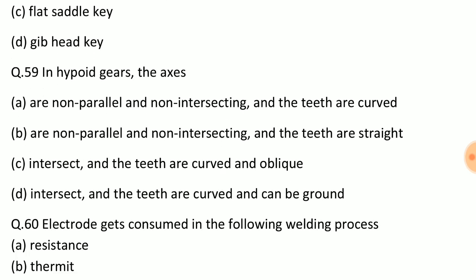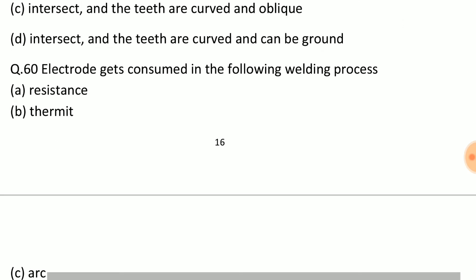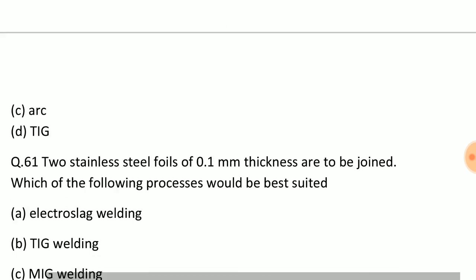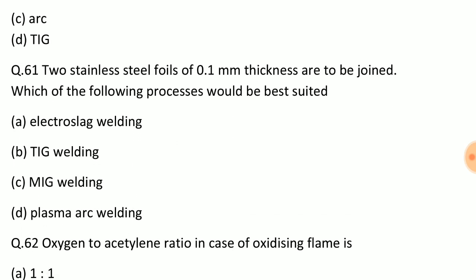Question: In hypoid gears the axis? Answer: Option A, are non-parallel and non-intersecting and the teeth are curved. Question: Electrode gets consumed in the following welding process? Answer: Option C, arc welding process. Question: Two stainless steel foils of 0.1 mm thickness are to be joined. Which of the following process would be best suited? Answer: Option D, plasma arc welding.